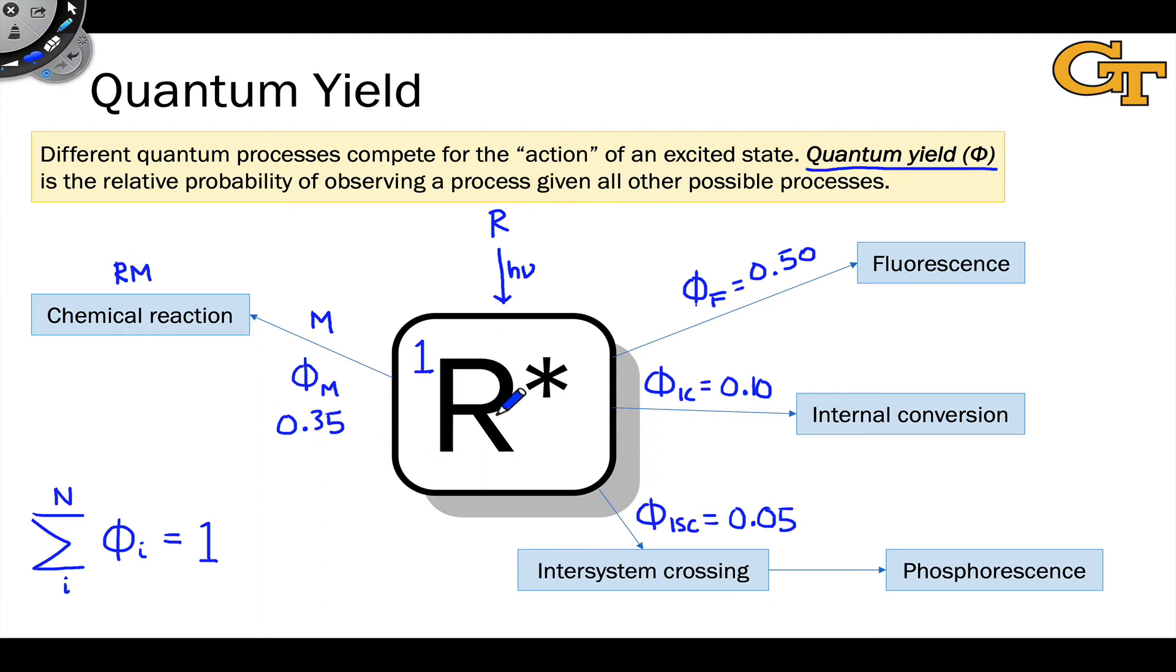For every one photon absorbed, 0.1 of those goes toward internal conversion of S1 to S0. For every one photon, 0.5 of those goes toward fluorescence, the emission of a photon from S1 to get R back to S0. And 0.05, for every one photon absorbed, 0.05 of those goes toward inter-system crossing to the lowest triplet state.